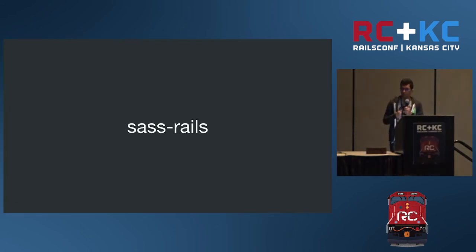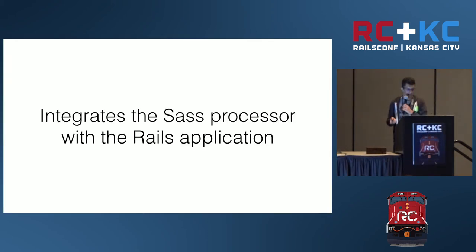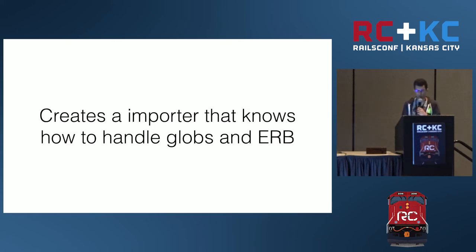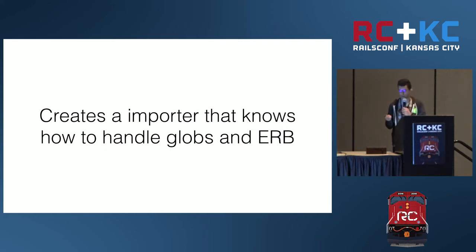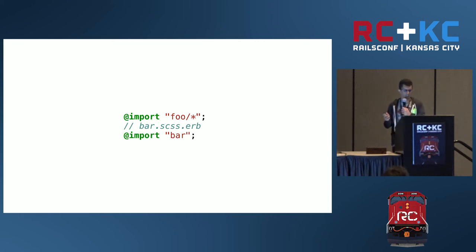Another gem is sass-rails. The Sass preprocessor is built into Sprockets itself, but there are some particularities of integrating Sass with Rails that need to be handled by this gem. It defines generators so that when you run rails scaffold, new Sass files are generated. It also creates an importer that knows how to handle globs, paths, and ERB, meaning that if you have glob imports or try to import an ERB file in your Sass files, you need this gem.